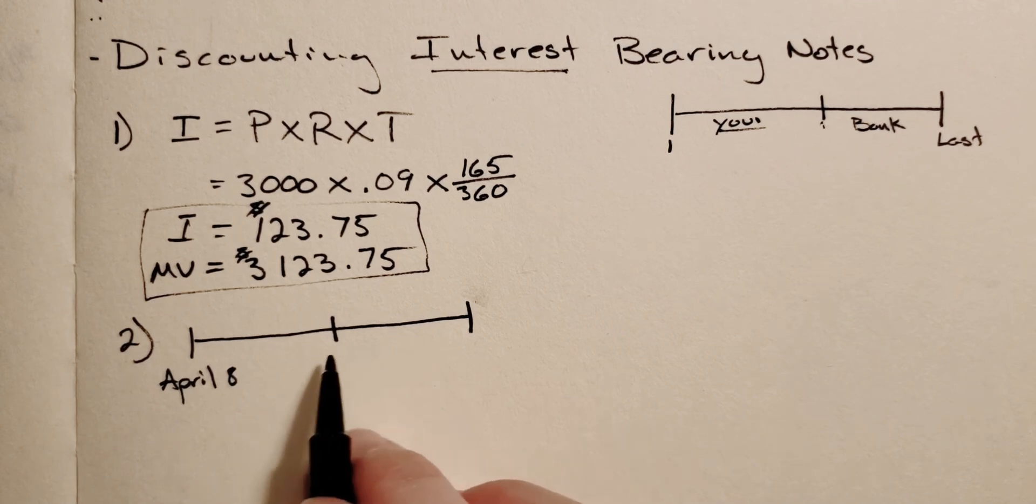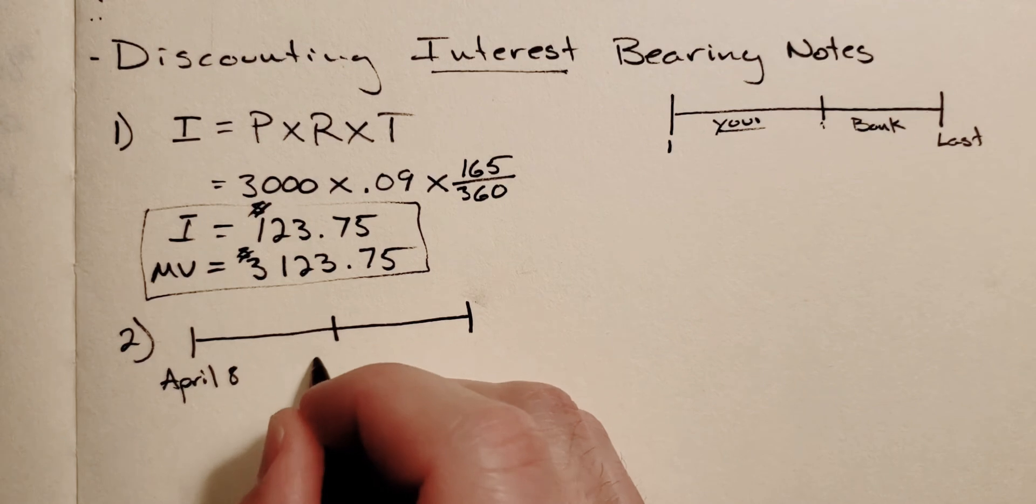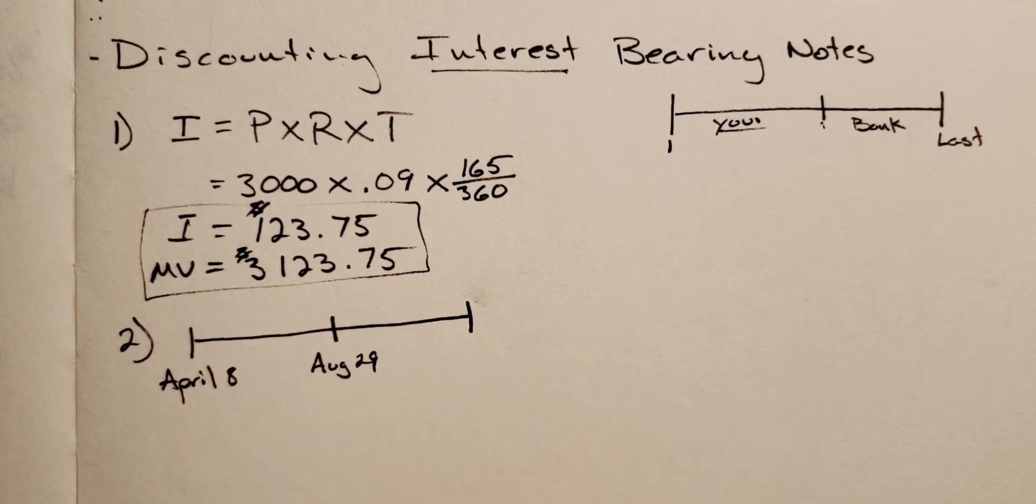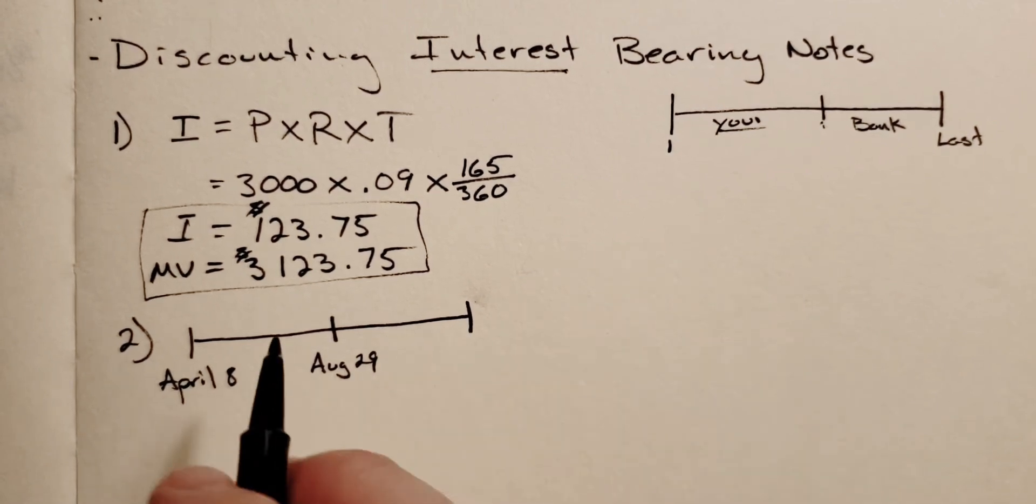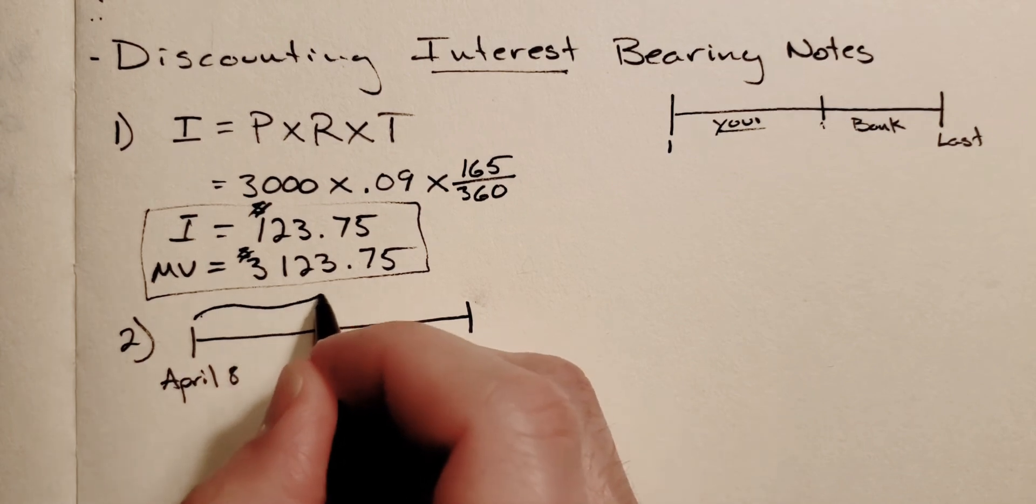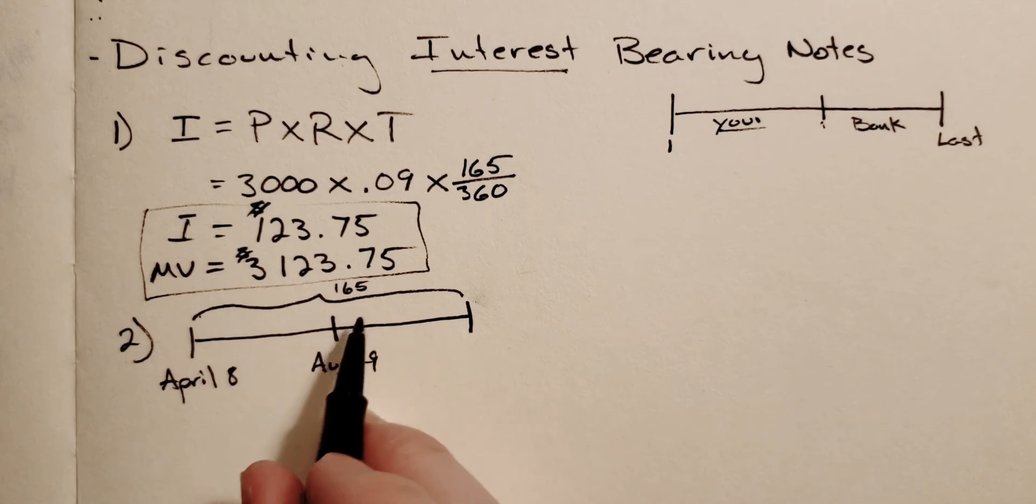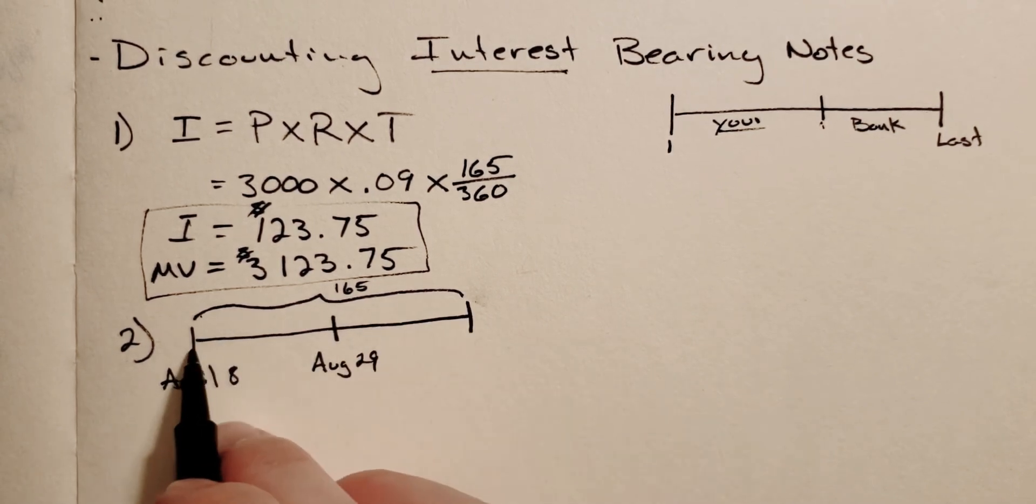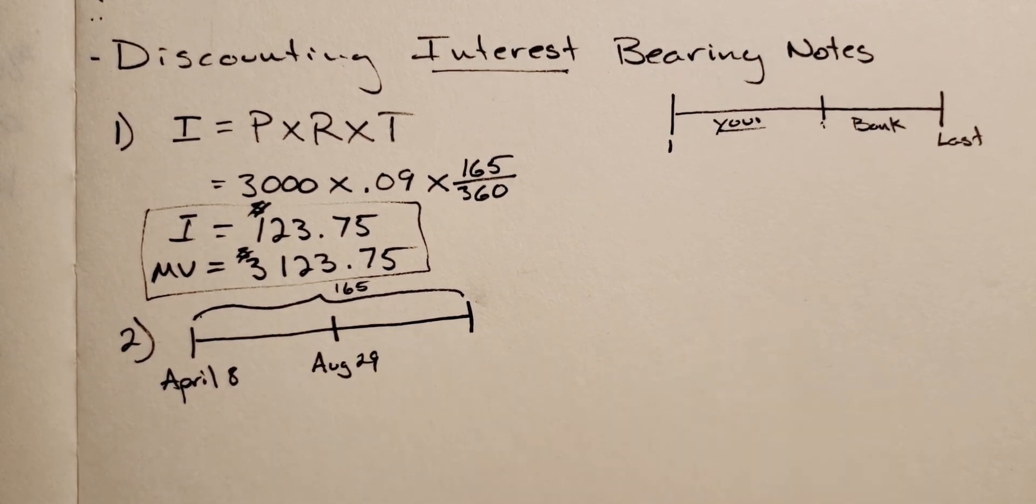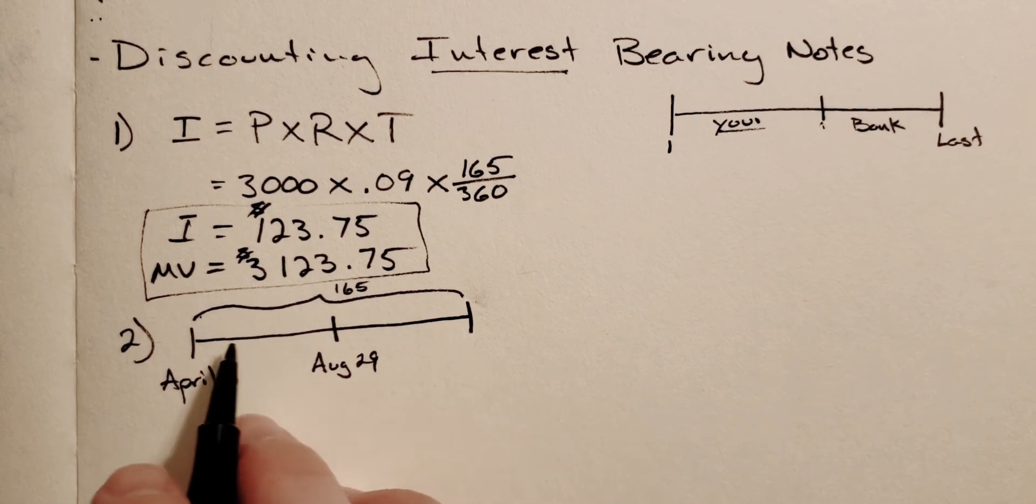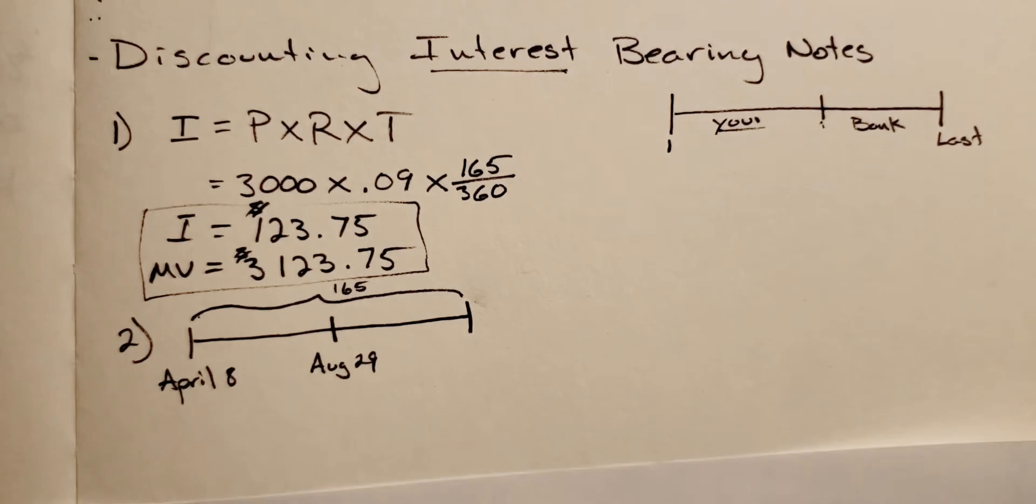And then the date that it's cashed in is August 29th. Now as far as the last date, it's not super important at the moment, but we do need to know a couple of things, that this whole loan is 165 days. So if we know the total amount of days and we know how long we held the note for, we can figure out how long the bank held the note for, and then we can figure out the cash discount. So 165 days, and what we need to do is refer to our calendar.